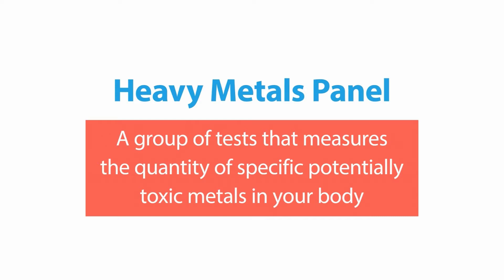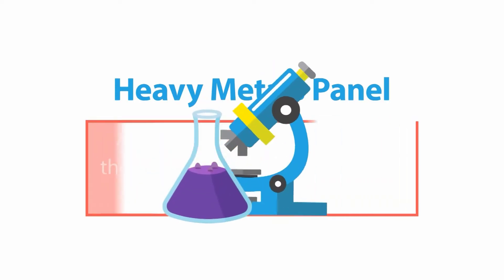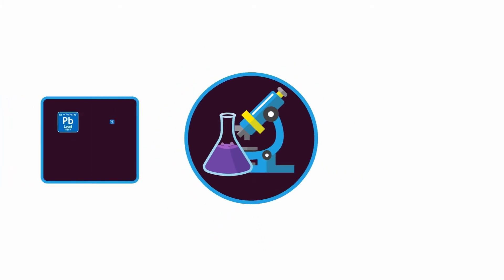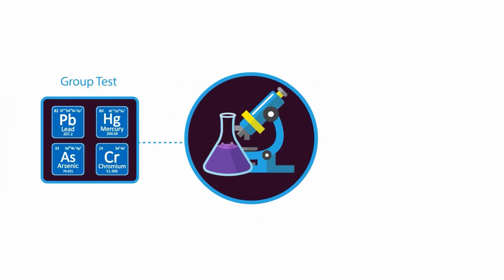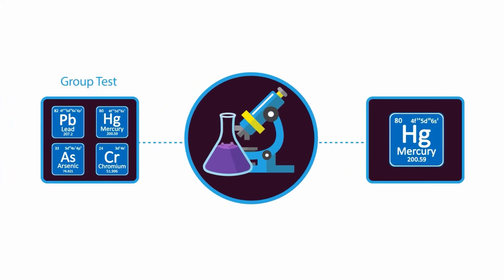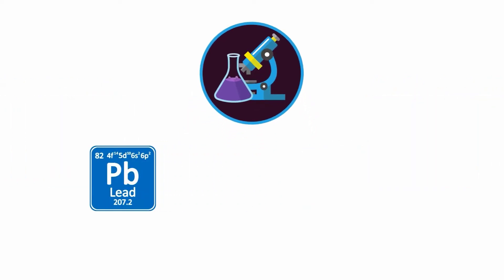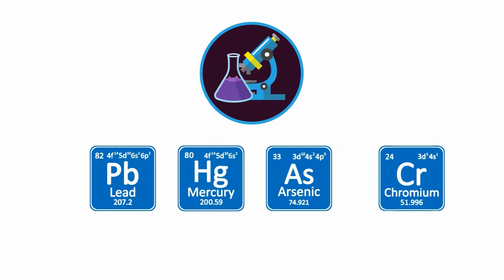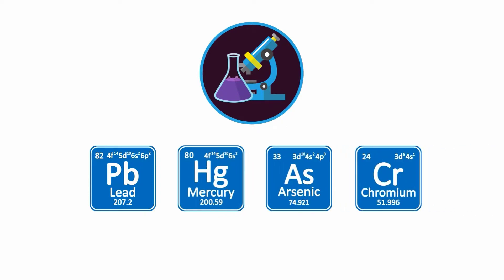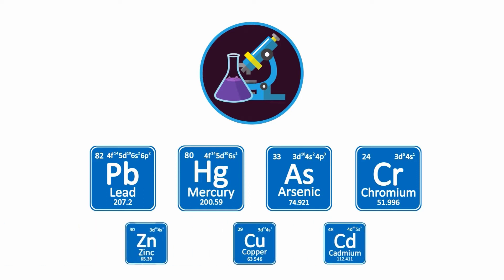A heavy metals panel is a group of tests that measures the quantity of specific, potentially toxic metals in your body. A laboratory may offer several different groupings of heavy metals panels as well as tests for individual metals. The most common combination includes lead, mercury, arsenic, and chromium. Additional metals may be included such as cadmium, copper, or zinc.